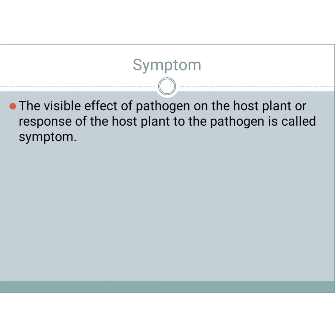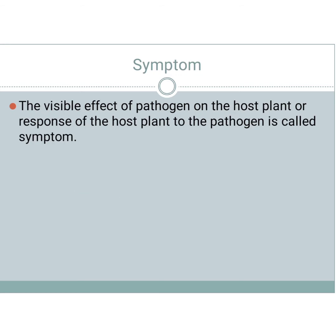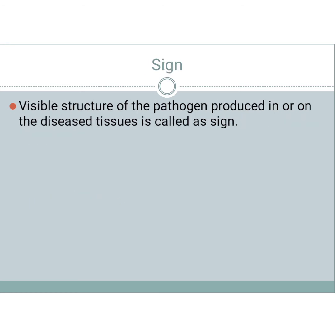We identify that a plant is infected by seeing the symptom. A symptom is a visible effect of a pathogen. A sign is nothing but the visible structure of the pathogen produced in or on the diseased tissues. The major difference is: symptom is a visible effect and sign is a visible structure — this is a frequently asked objective question.